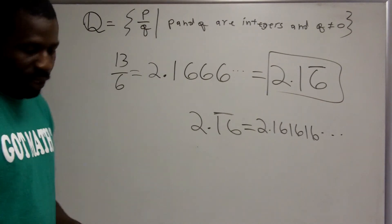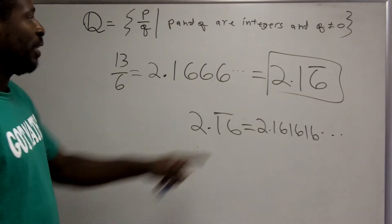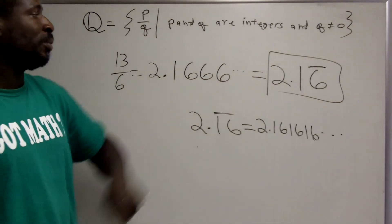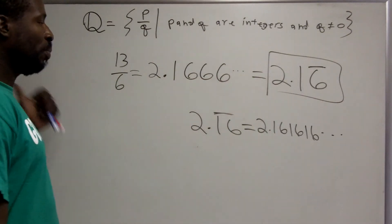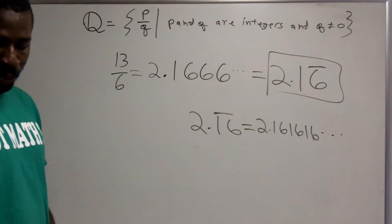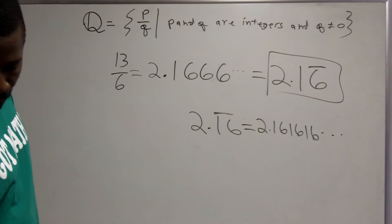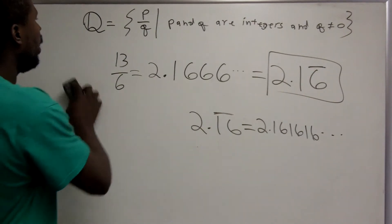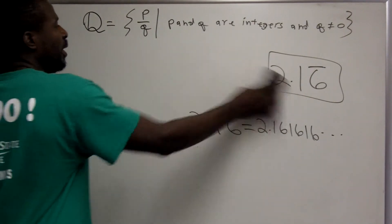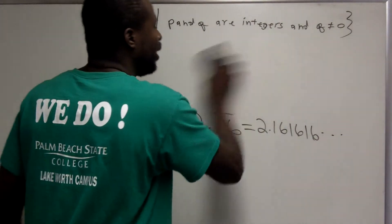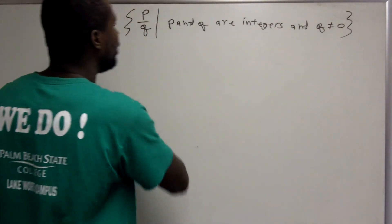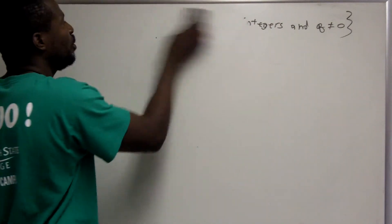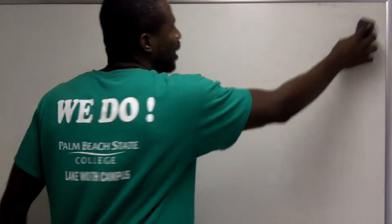So that's an example of a repeating decimal, and the previous example was a terminating decimal. That's how we take fractions and turn them into decimals.